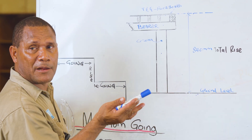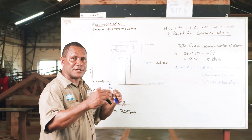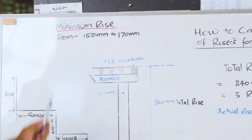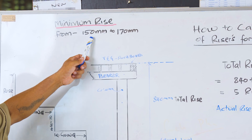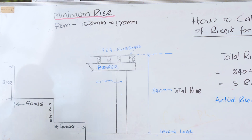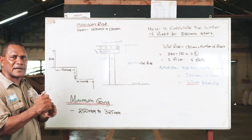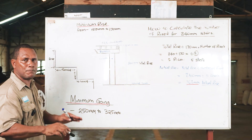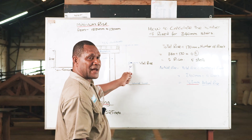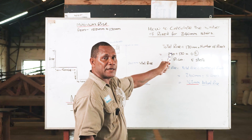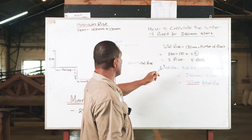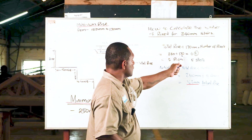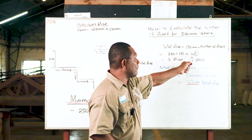This is finding how many steps are inside the house — a very important thing for you to consider. This is the minimum rise, which a carpenter sets at 150 millimetres to 170 millimetres. That is the standard rise between the steps. You go up and the total rise here is 842 millimetres. Then you divide that total rise by the minimum rise, which is 170 millimetres. So 842 divided by 170 equals 4.9.